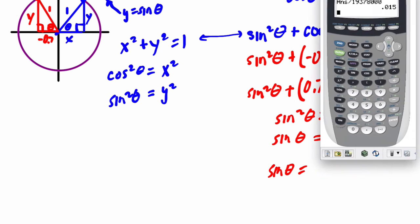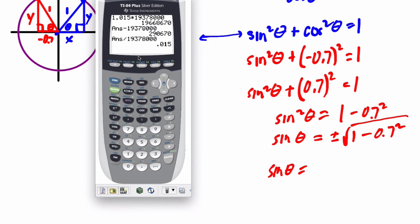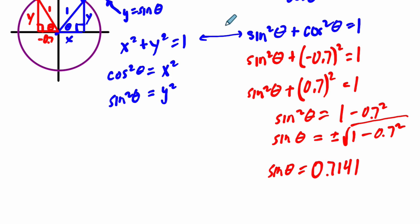0.7 squared plus the sine squared of theta equals 1. And that means the sine squared of theta is going to equal 1 minus 0.7 squared. And I want to know what sine is, not the sine squared. So I'm going to take the square root of both sides. Positive or negative square root of 1 minus 0.7 squared. So that means the sine of theta equals what? Let's use our calculator here.